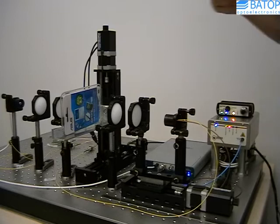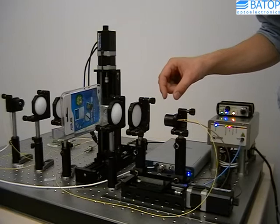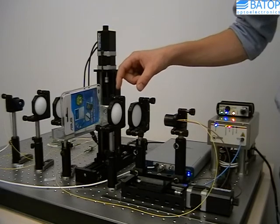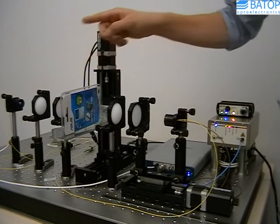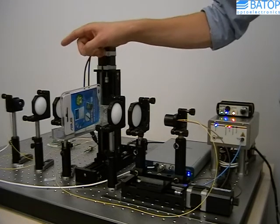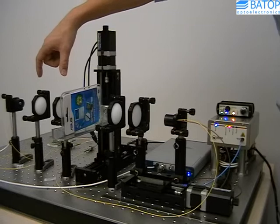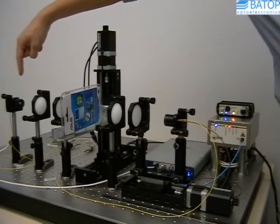The TeraHertz radiation generated by the photoconductive antenna is coupled into free space with the help of the hyperhemispherical substrate lens. It is first collimated and then focused by a pair of PTFE lenses. The sample is placed in the focal plane. Upon transmission through that sample the T-rays are collected and focused onto the detector antenna by another pair of plastic lenses and the silicon substrate lens of the detector module.